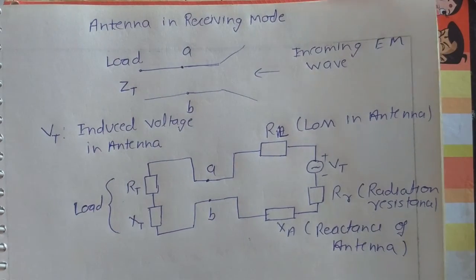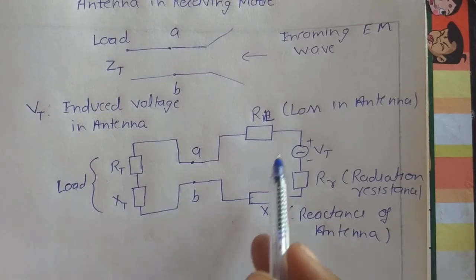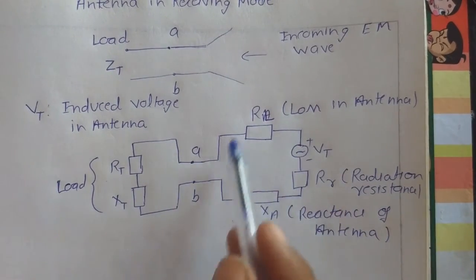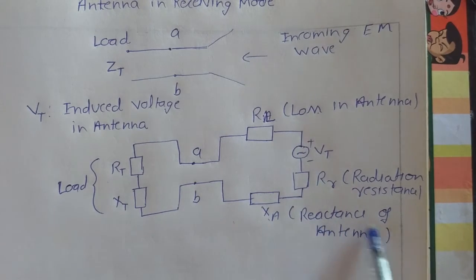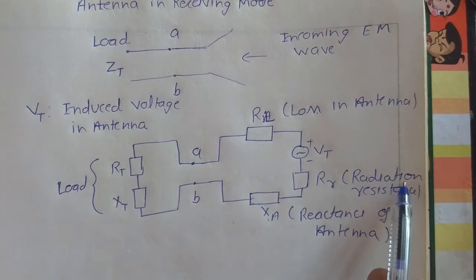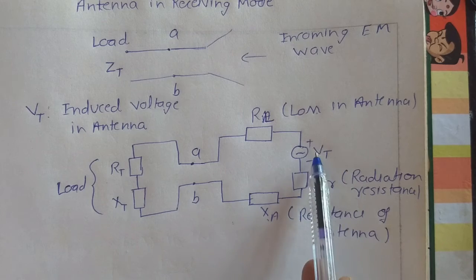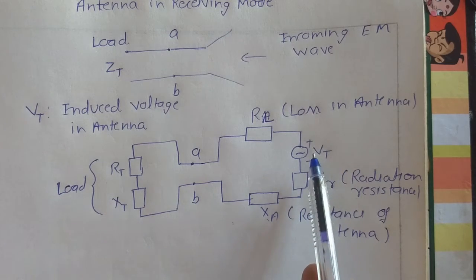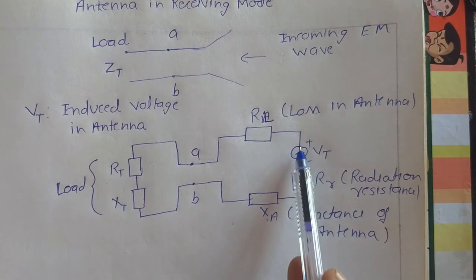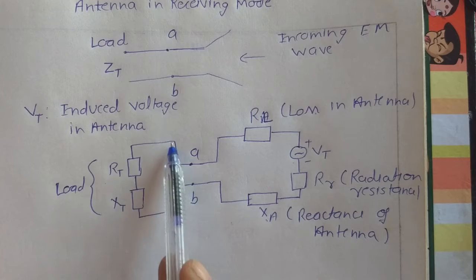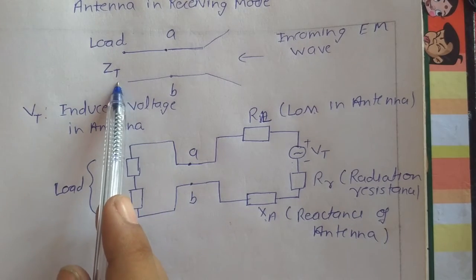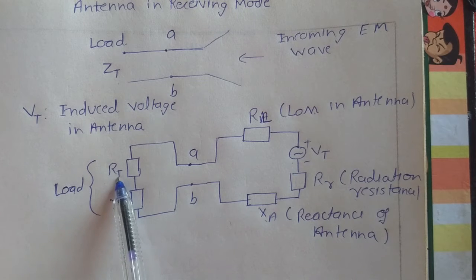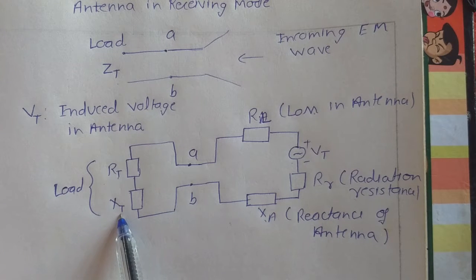This is the equivalent circuit of the antenna in receiving mode. RL is the loss resistance, X is the reactance of the antenna, RR is the radiation resistance, and VT is the induced voltage at the antenna terminal. This is the equivalent circuit of the load connected to the antenna, where RT is the real part and XT is the imaginary part of the load.